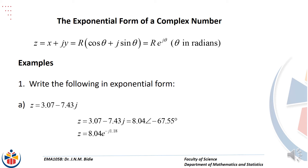Then we go to the exponential form of a complex number. Note that we are able to change from polar form to exponential form. E to the power jθ is equal to cos θ plus j sin θ. We move from rectangular form to polar form to exponential form. Note that the polar form can take the angle in radians or degrees, but in exponential form theta must always be in radians.